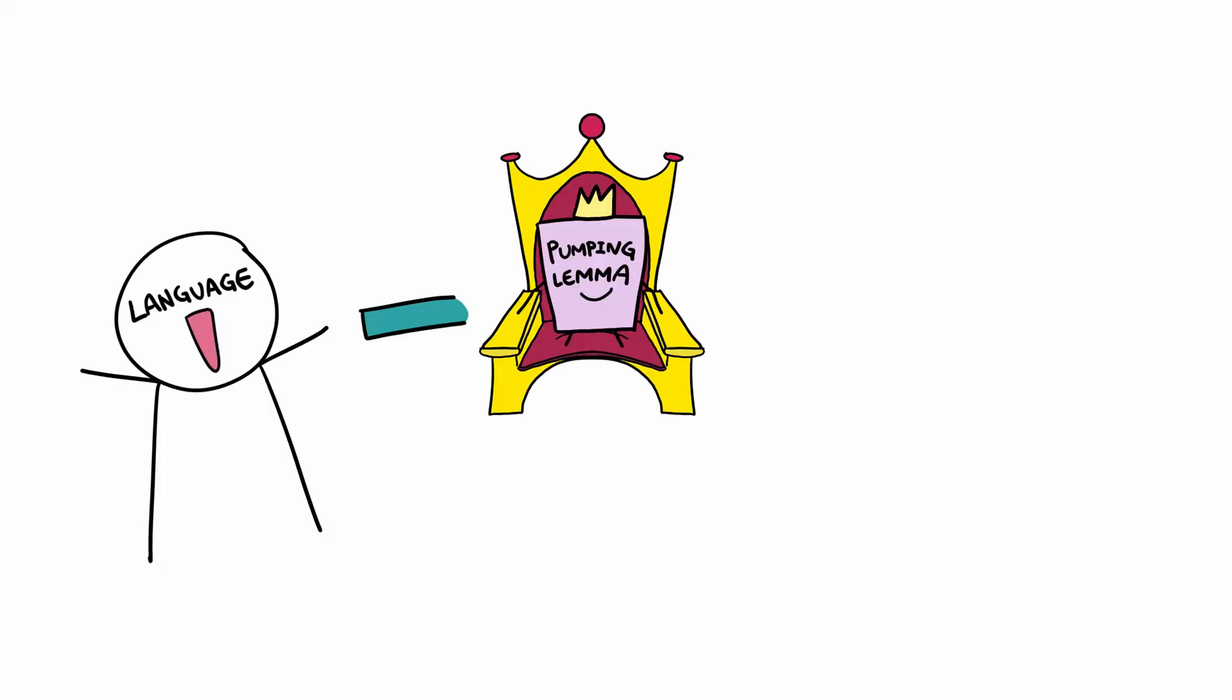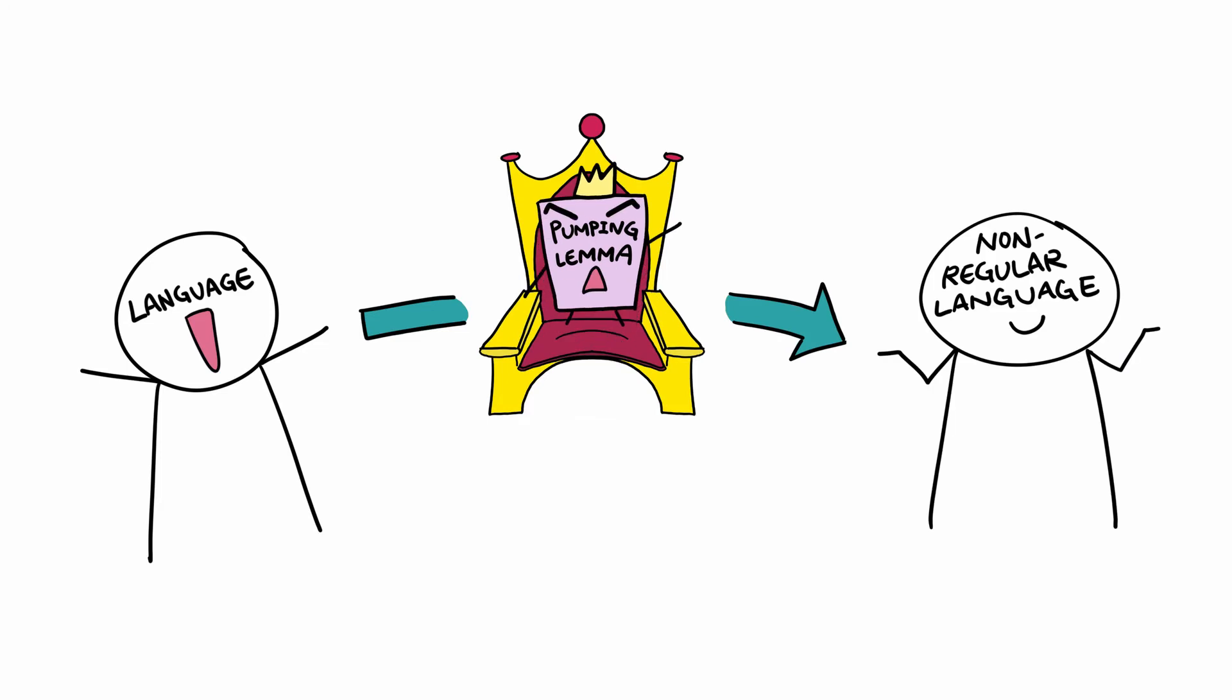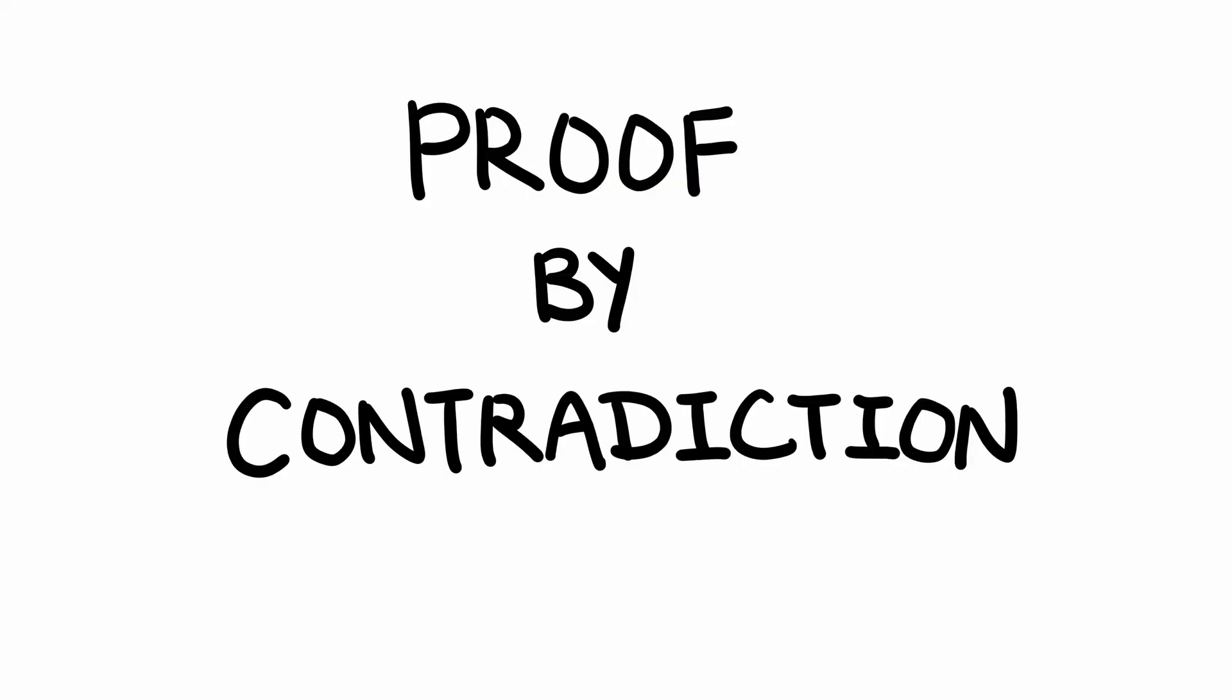So, to use the pumping lemma to formally prove that a language is not regular, we show that it does not satisfy the pumping lemma. This is done through a proof by contradiction. Here is the intuition for how the proof works.